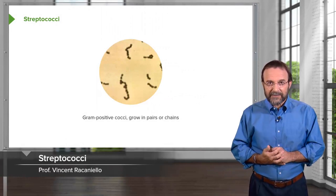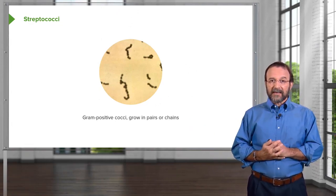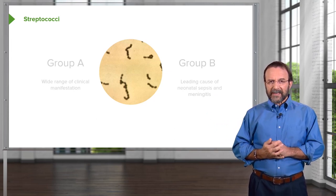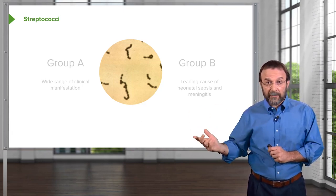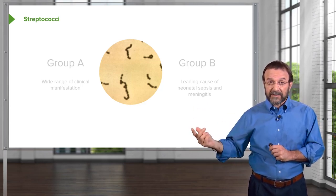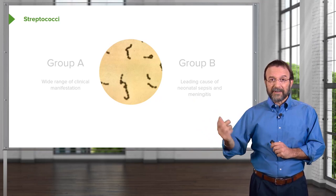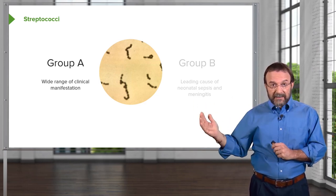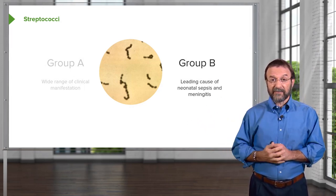Let's move to streptococci, also gram-positive cocci growing in pairs or chains, as you can see in this micrograph. We put them into two groups: there are group A streptococci, which cause a wide range of clinical diseases, and group B, which are leading causes of neonatal sepsis — disseminated infections and meningitis. This is a simple classification that's easy to remember.